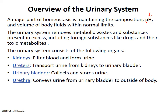The urinary system consists of the kidneys, the ureters which transport urine from the kidneys to the urinary bladder, the urinary bladder which collects and stores urine, and finally the urethra which takes the urine out of your body. There are two ureters but only one urethra. A memory tip: the urethra has an 'a' in it, just like 'first,' and there's only one first.